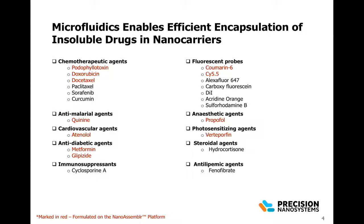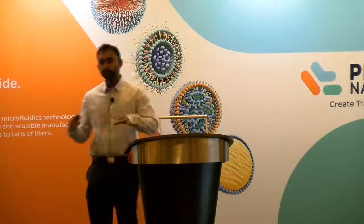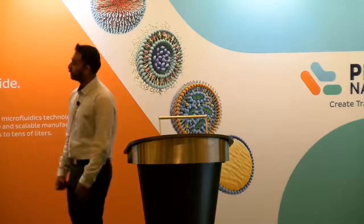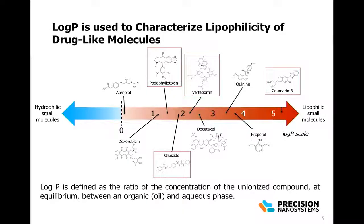If we take the drugs marked in red and put them on a logP scale, you can see they have various logP values going all the way from about zero to about five. The logP scale is just a measure of the lipophilicity of your molecule — the higher the logP value, the more lipophilic your molecule is. All of these have various challenges of their own, and we're going to talk about four drugs in this class and see how microfluidics can address some of these challenges.